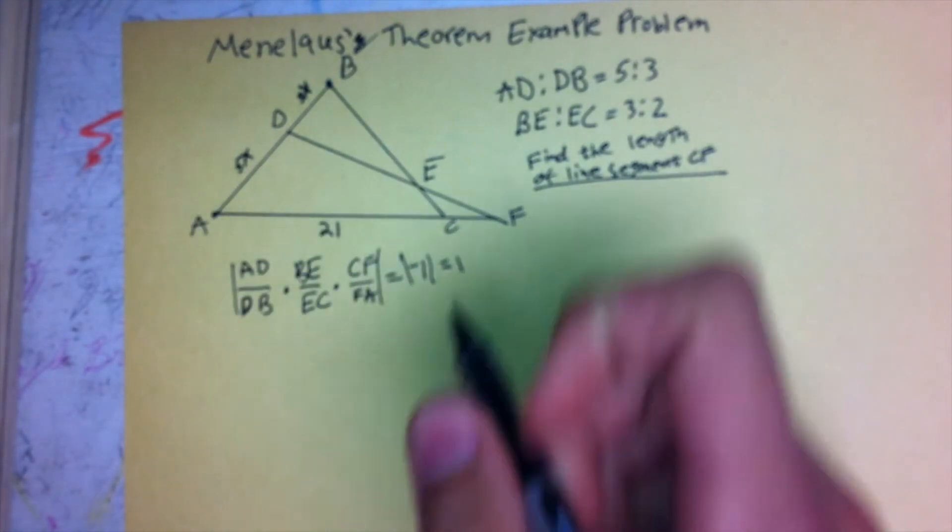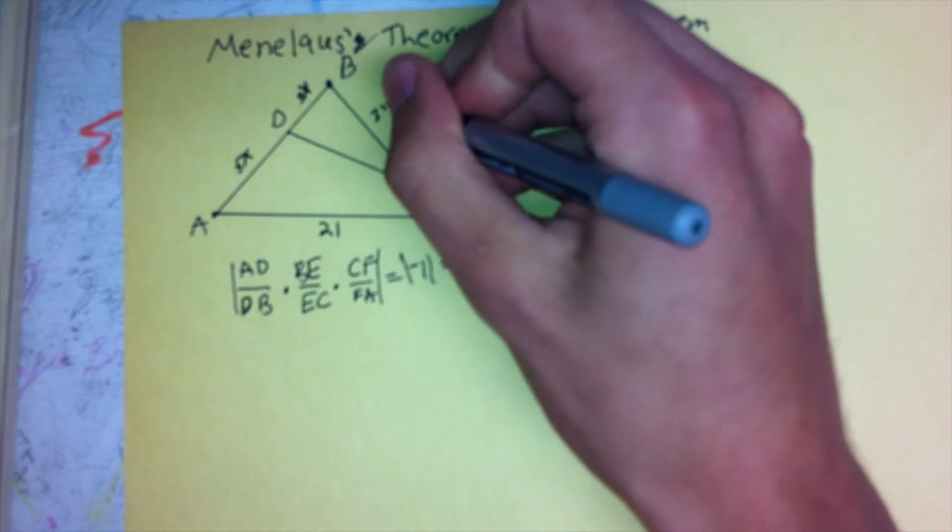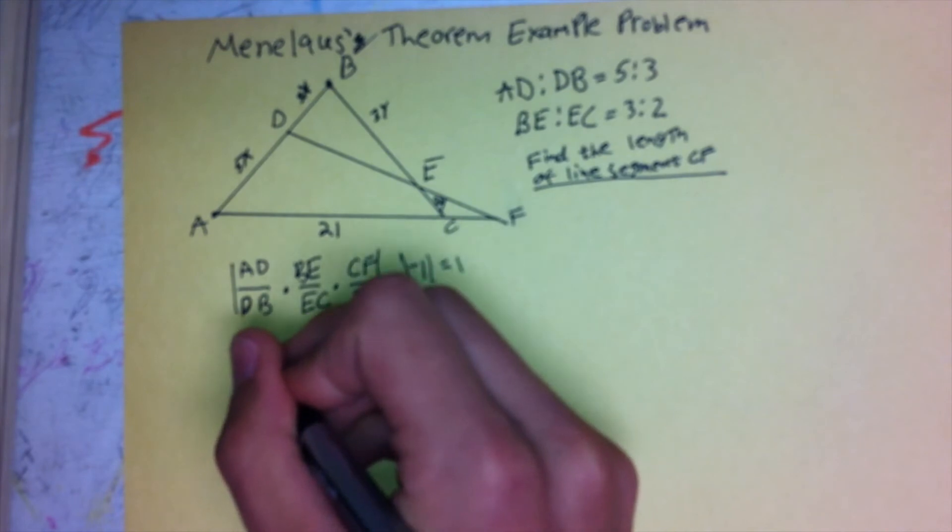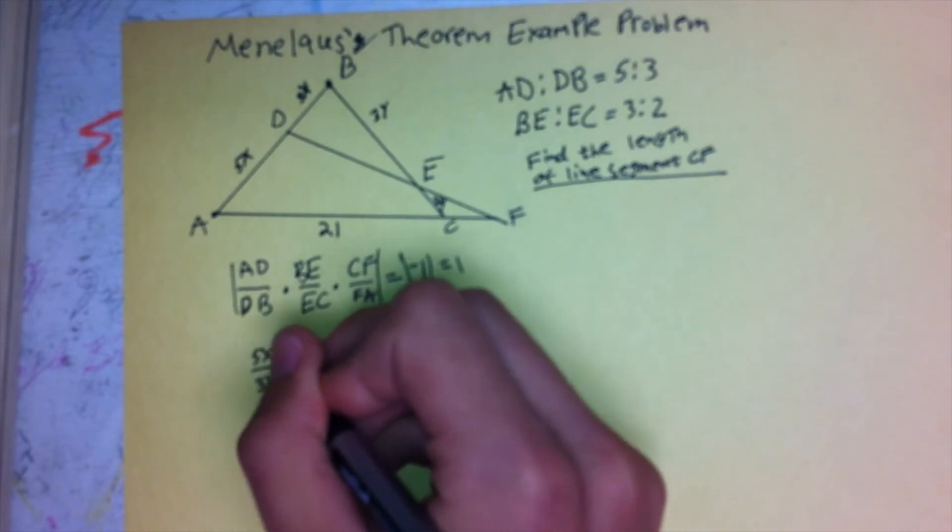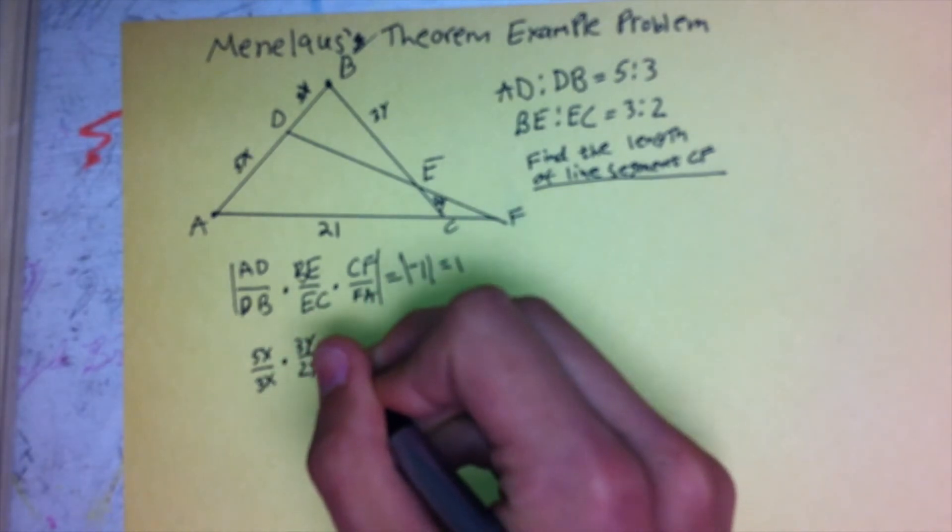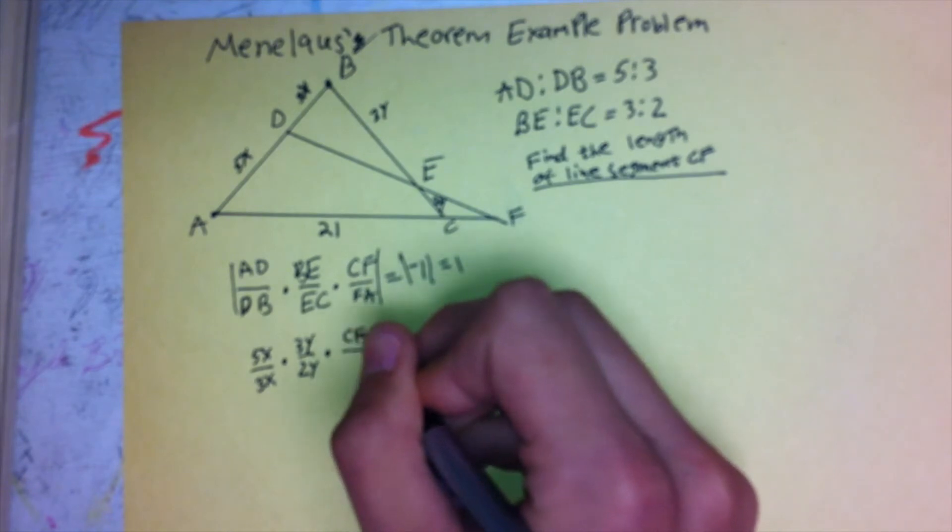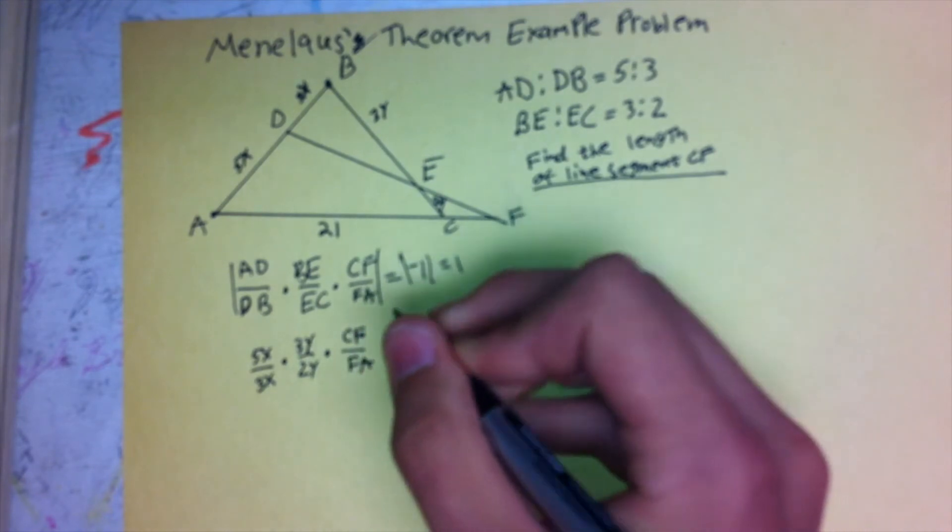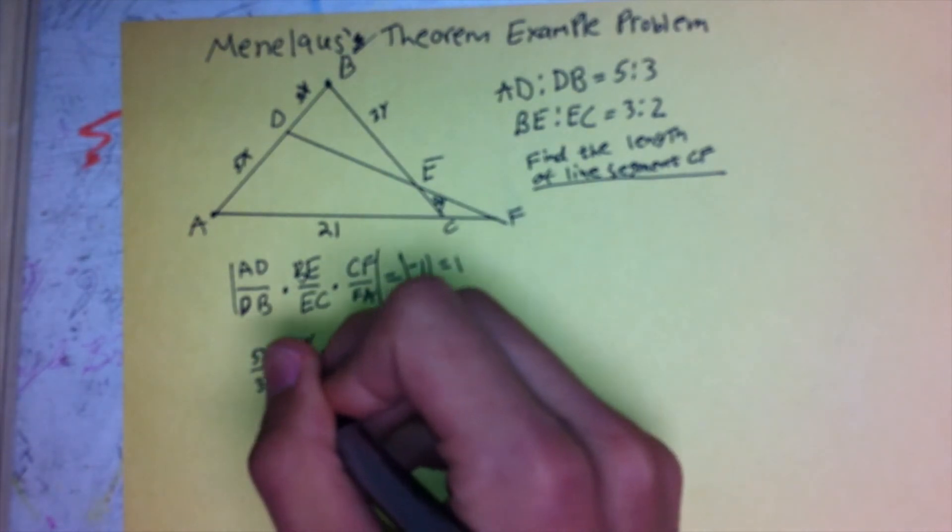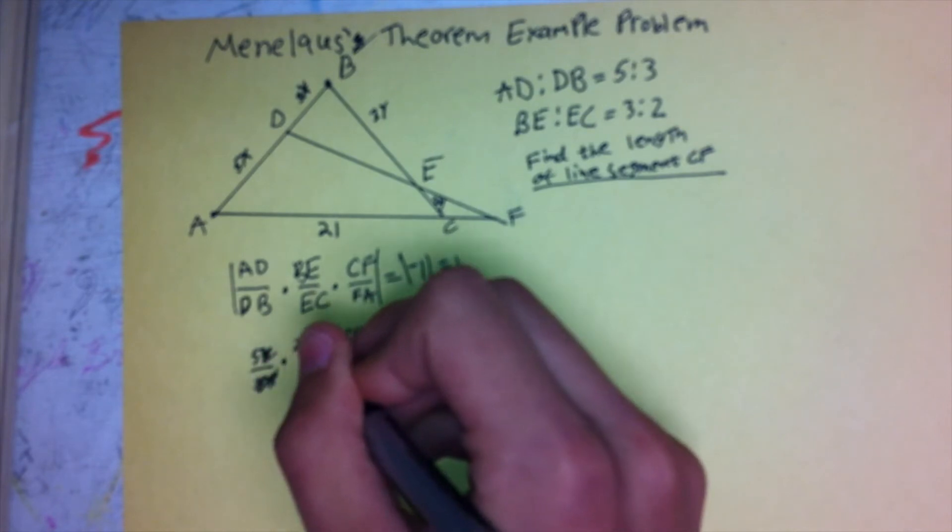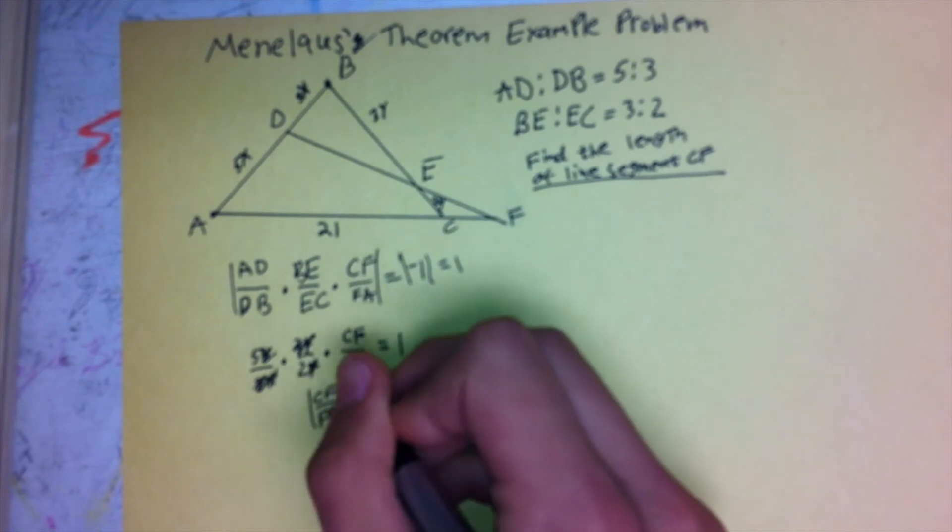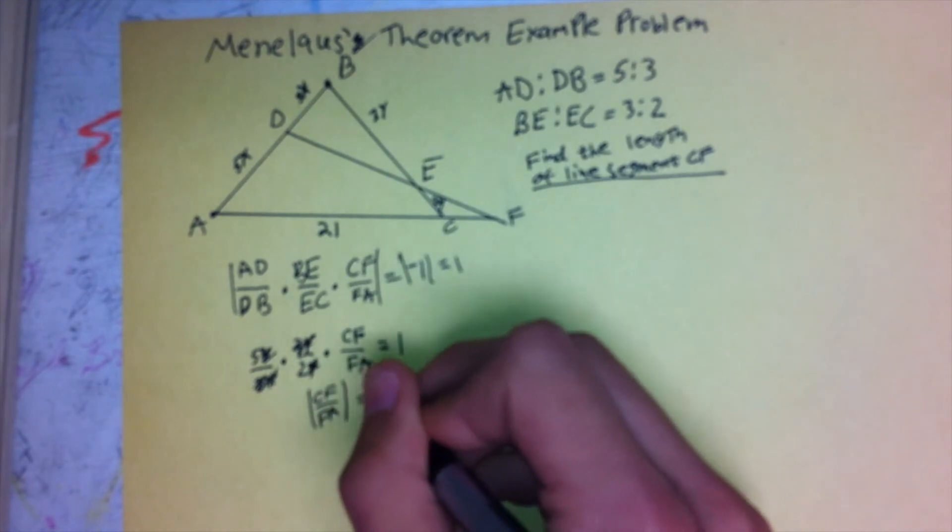We're going to do the same thing with BE to EC. We're going to say 3y to 2y. And so, as we substitute them in, we get 5x over 3x times 3y over 2y times CF over FA is equal to 1. And so, the x's cancel and the 3's cancel and the y's cancel, leaving CF over FA, or at least the absolute value of CF over FA, is equal to 2 fifths.